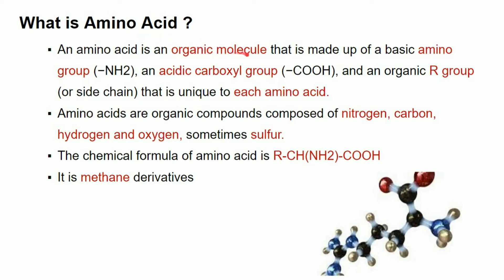Amino acid is an organic molecule. What are the atoms? Nitrogen, Carbon, Hydrogen, Oxygen. These 4 atoms make up an amino acid. Sometimes amino acid will also add sulfur. Normally amino acid is made up of Nitrogen, Carbon, Hydrogen, Oxygen — that is the main source. The amino acid will sometimes add extra sulfur.